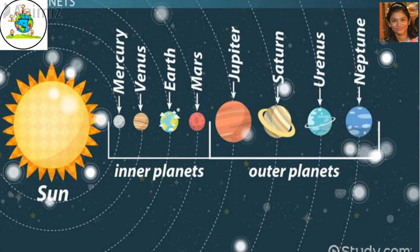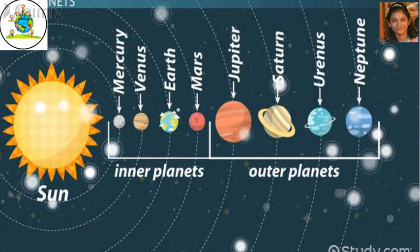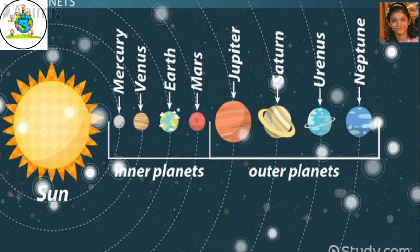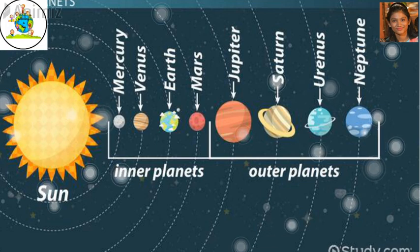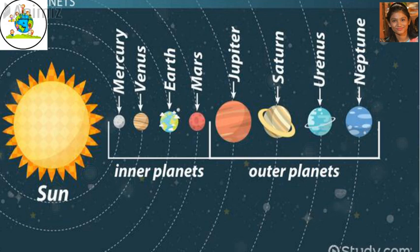And they are Mercury, Venus, Earth. Oh, Earth. Earth is Mother Earth. It is the planet on which we live, right? Then Mars, Jupiter, Saturn, Uranus and Neptune.